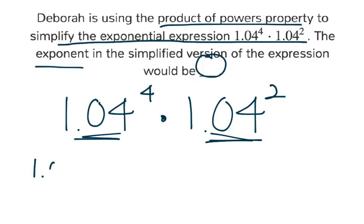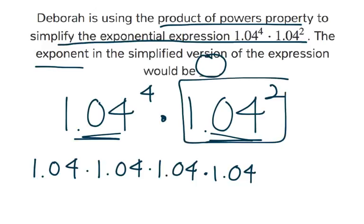1.04 to the power of 4 is basically 4 of these being multiplied together here times 1.04. And then the second set, 1.04 squared, adds two more. And they're all being multiplied together.